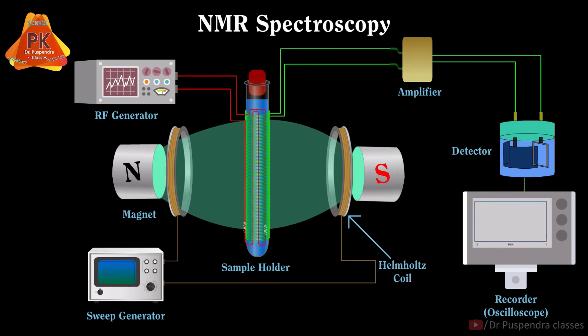When this resonance in the protons takes place then receiver coil will receive the signal and it will pass the signal towards the amplifier. Then amplifier will amplify the signal and it will go towards the detector and finally detector will pass the signal towards the recorder and ultimately we will get the NMR signal. So this is the details about instrumentation and working of NMR spectroscopy.